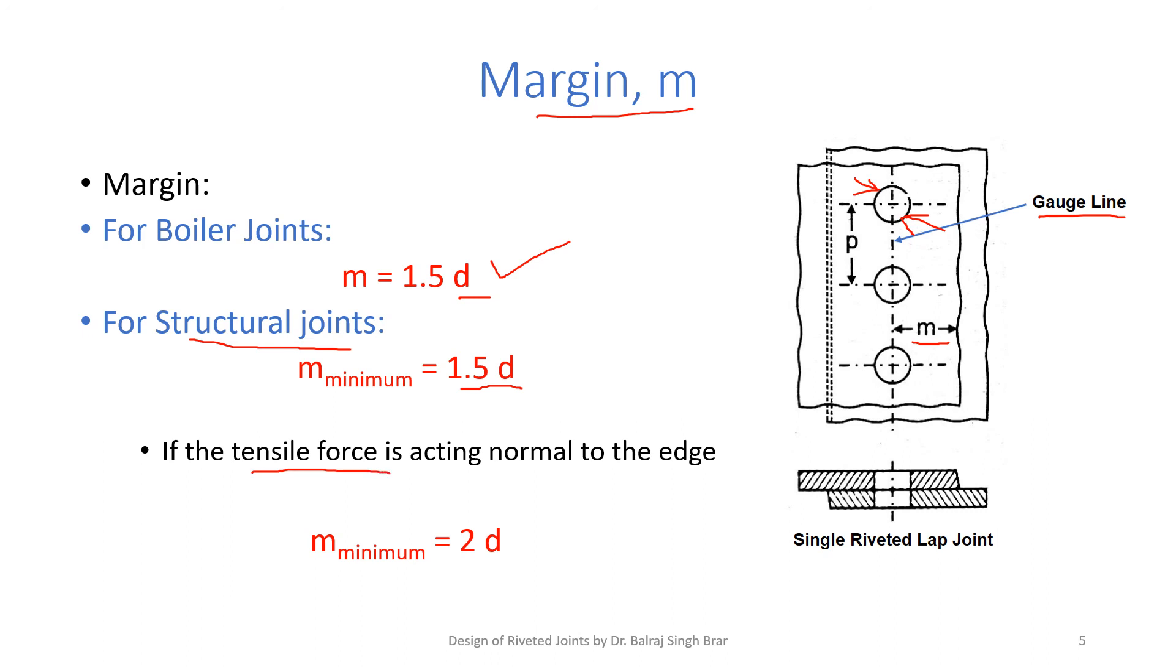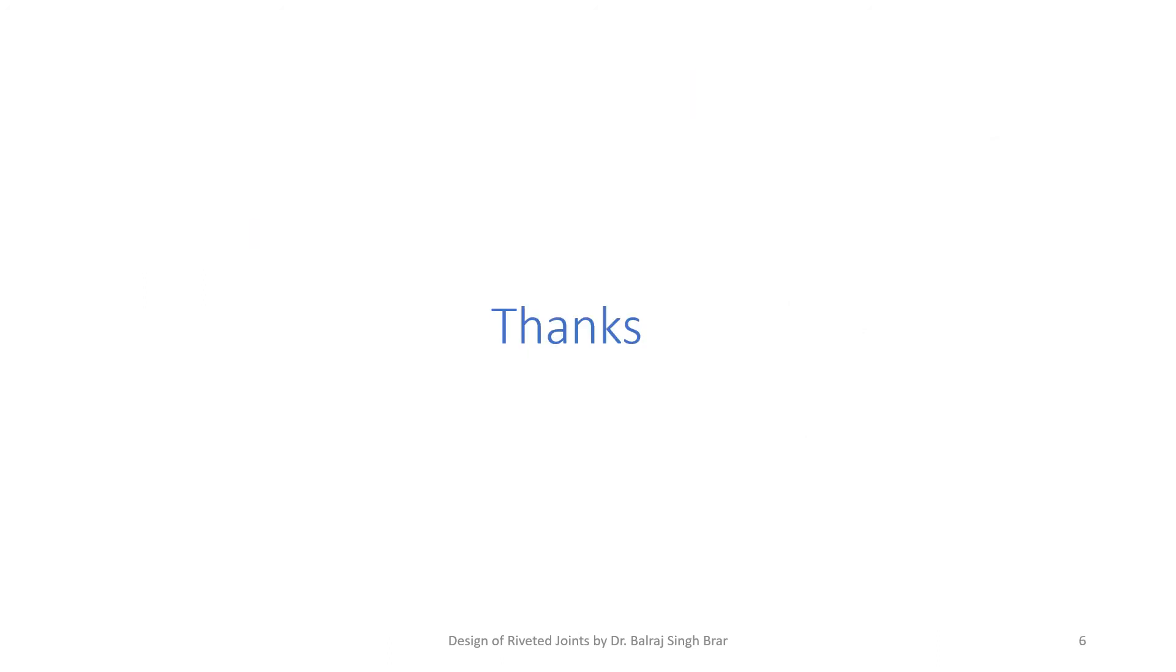If the tensile forces are exactly acting normal to the edge, we can keep minimum margin to be 2D in case of the structural joints. By simply controlling the margin, we know from the experience and from these empirical relations, we can control these two types of failures. With this, the lecture is complete. Thanks.